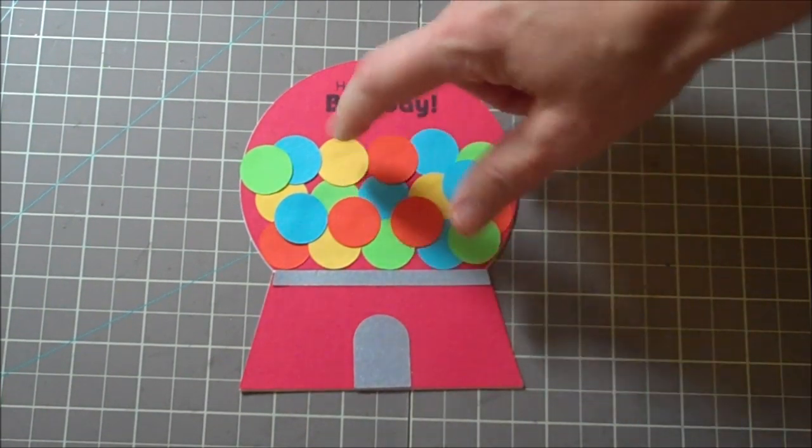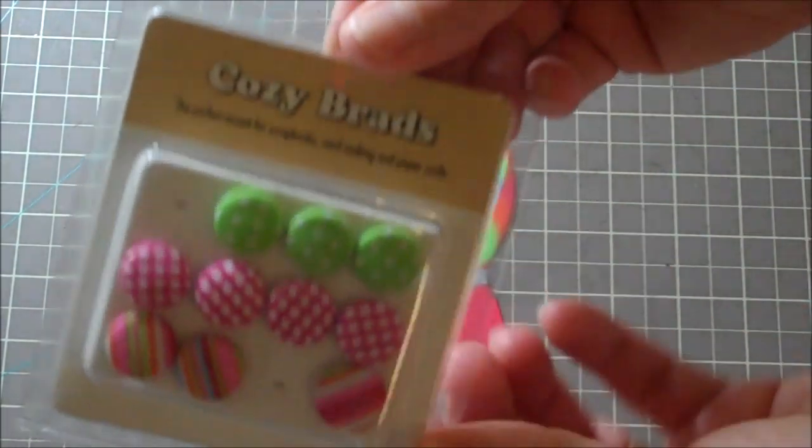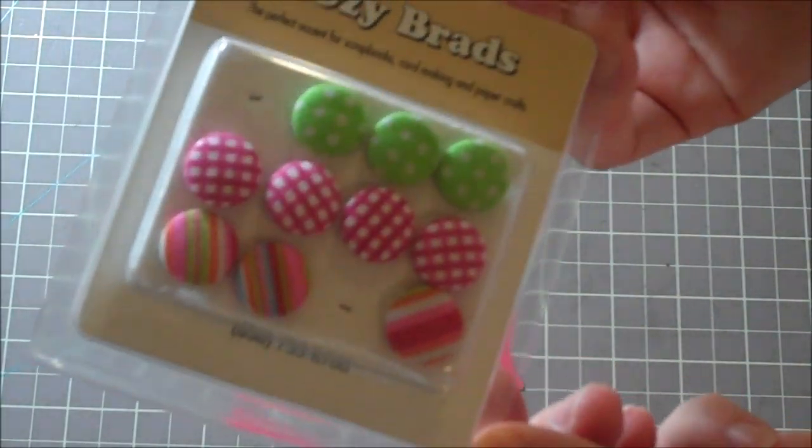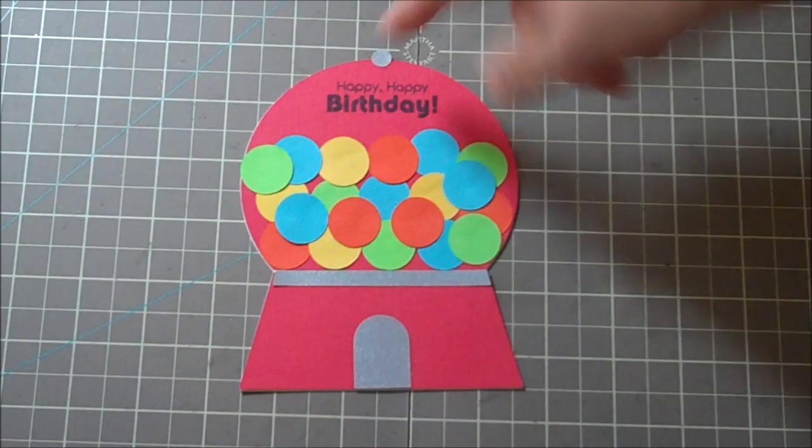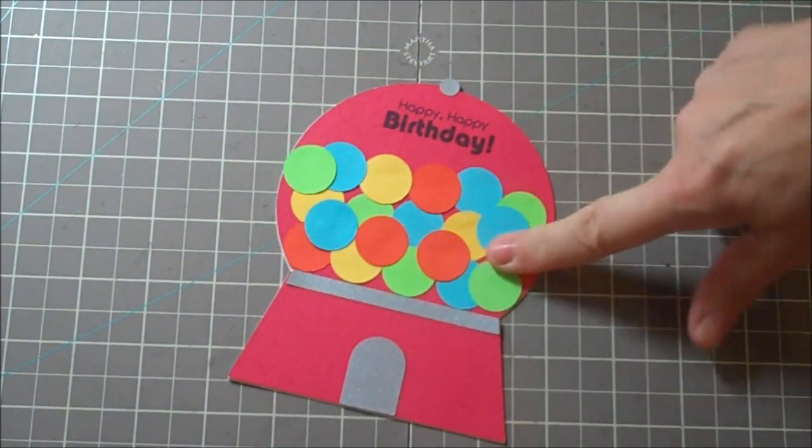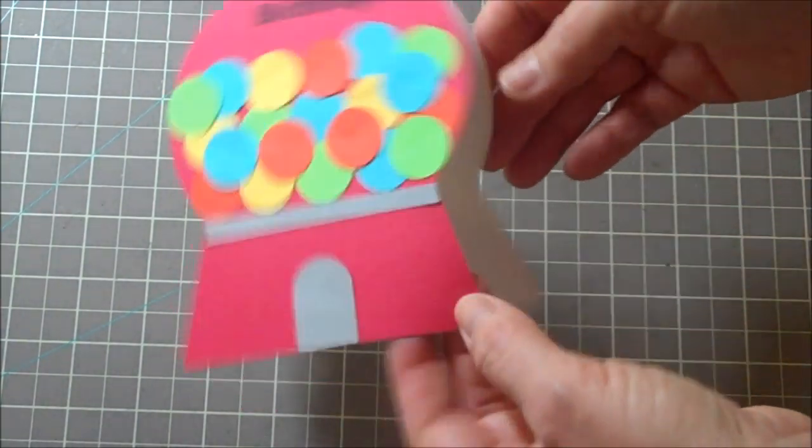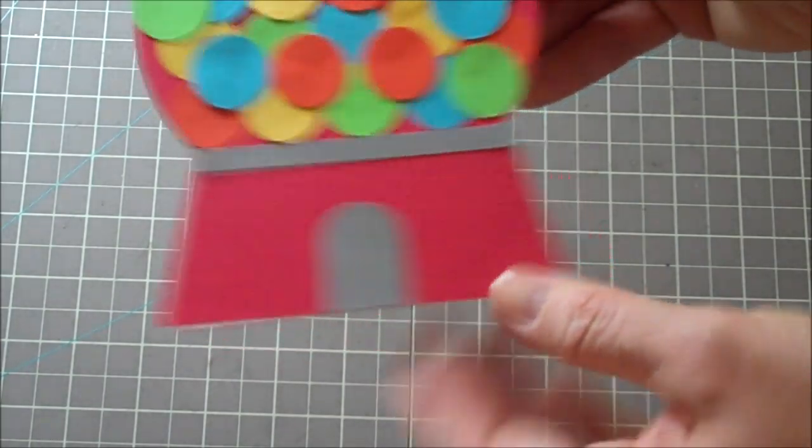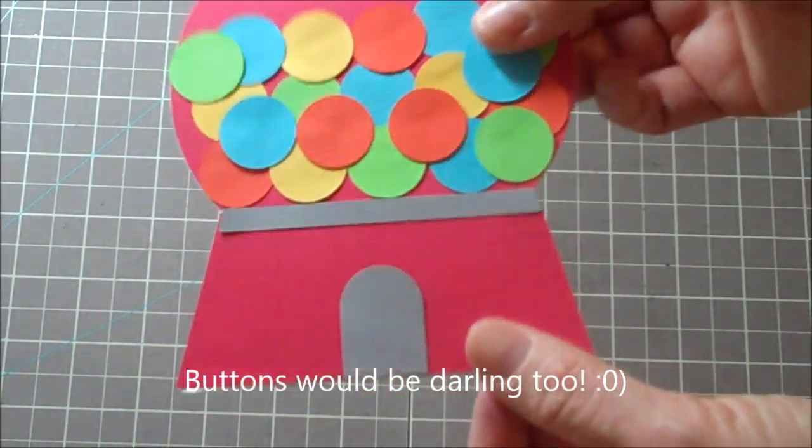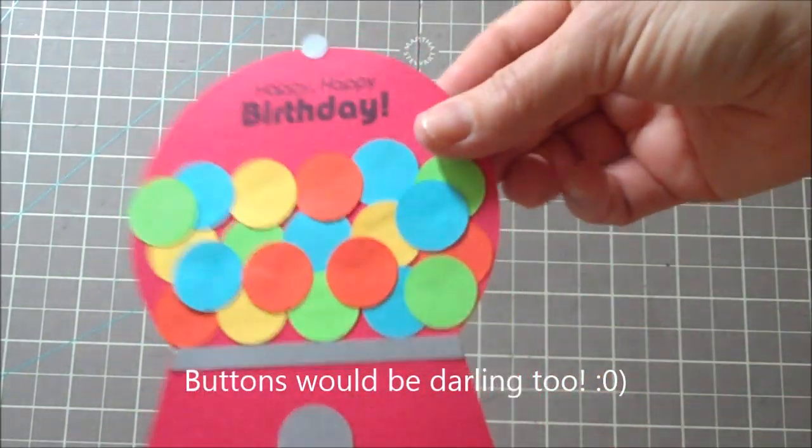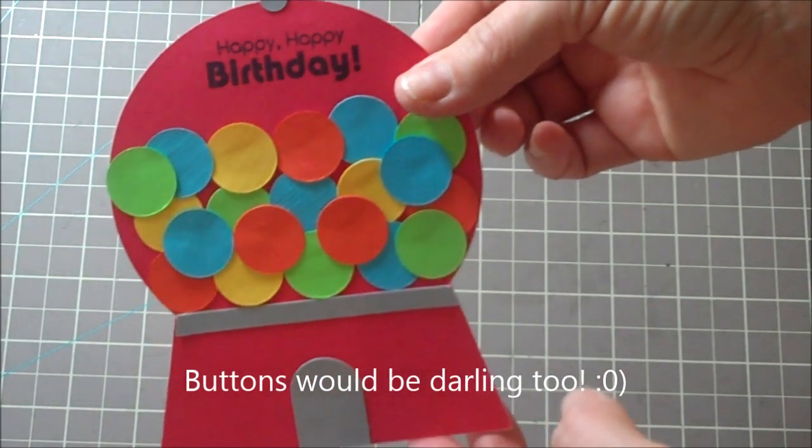Another fun way, if you want to do sequins instead of these dots, if you want to do some of these brads in there, there's some rhinestones if you want to do that to really jazz this up a little bit, I think that would be really cute. I did want to keep this kind of flat because I'm mailing this, so anyway I just decided to do it this way.